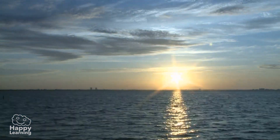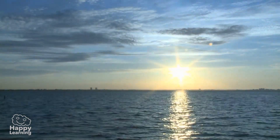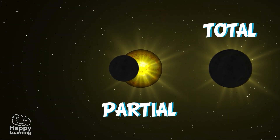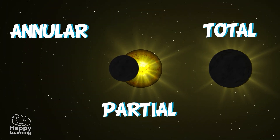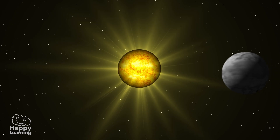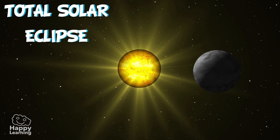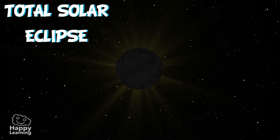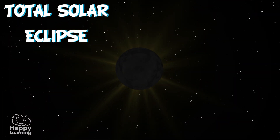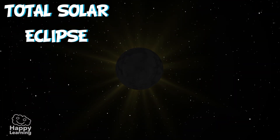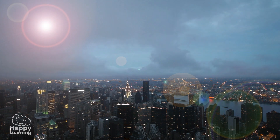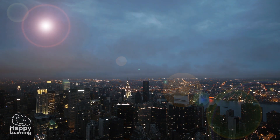Solar eclipses can be of different types: total, partial, or annular. A total solar eclipse is when the Moon hides all of the Sun's light and the Sun's face disappears behind the Moon. In the middle of the day, it would seem as if night has fallen.